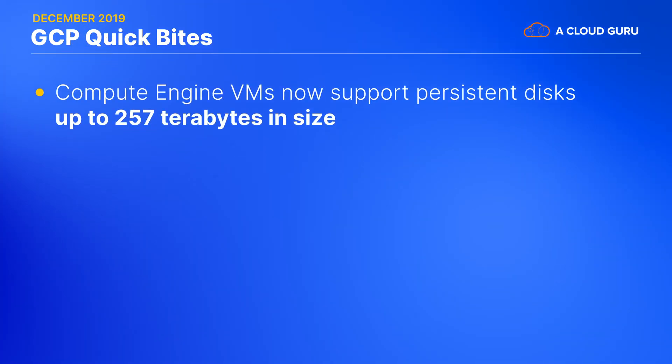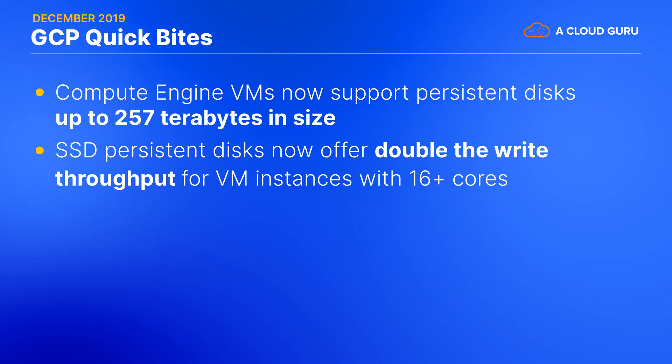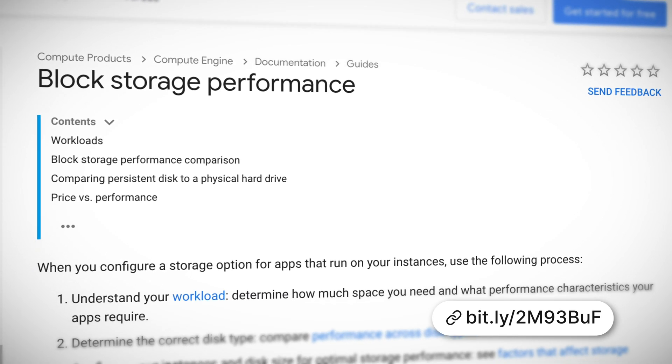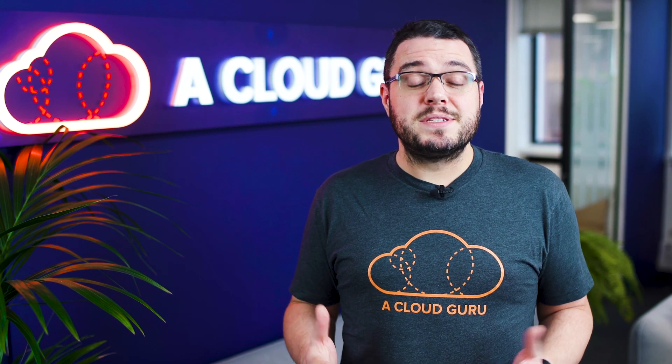First, we have some announcements for Google Compute Engine. You can now attach up to 257 terabytes of persistent disk storage to each VM instance, a big boost over the previous limit of 64 terabytes. SSD persistent disks now offer double the write throughput for VM instances with 16 or more virtual CPU cores, and 100k read IOPS for VM instances with 64 or more cores. Compute Engine announcements aren't always the most exciting, but these updates are going to be really helpful for running large monolithic legacy apps and databases.